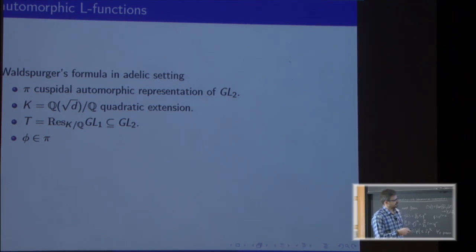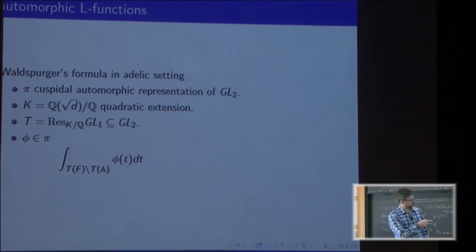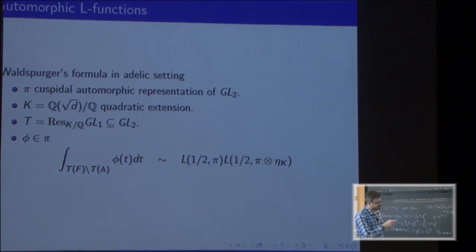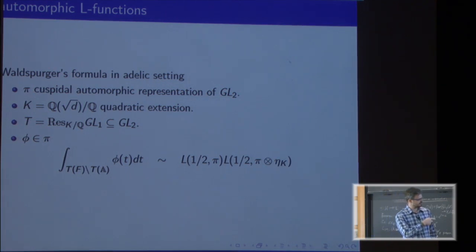Then we take an element in this space and we just integrate it over this torus. There should be a modulus squared, and this is again roughly the same value—the central value of the L function associated this time to the automorphic representation π, times the same thing twisted by a certain character.